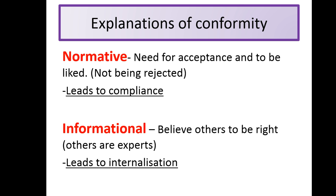Informational social influence — we as human beings always want to be right about everything, so we sometimes see others as experts in a particular field. For example, going into a religious building you've never been to before and everyone's taking off their shoes — you start looking around at what other people are doing because you believe these people to be correct since they know this particular religion. So you change your behaviour publicly because privately you also believe them to be right, and this leads to internalisation. The best way to remember this: informational starts with I, internalisation starts with I. The other one is normative versus compliance.